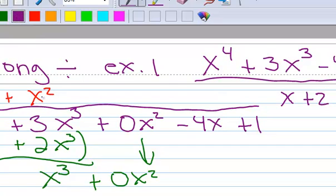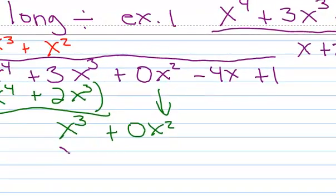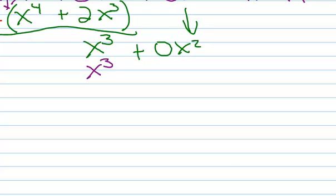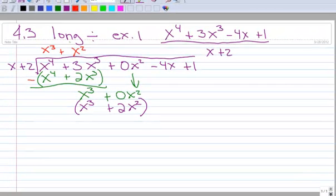x squared times x is x cubed. I write it right there. x squared times 2 is plus 2x squared. And I write it right there. Parentheses around it. And I'm going to subtract. And draw the bar underneath.